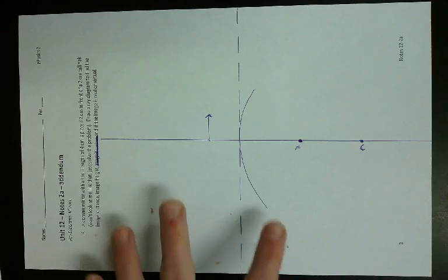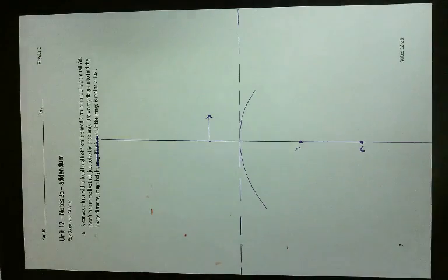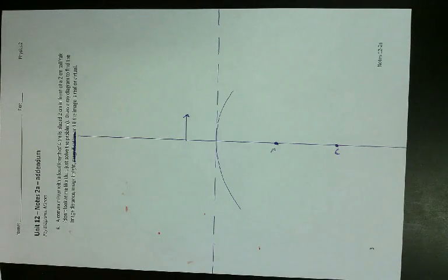Any questions before we move on? Okay. Let's do this. So there are three lines you have to draw. The first line you draw is parallel to the principal axis, and then reflects through F. The second one you draw goes through F, and then reflects parallel. And the third one you draw goes through C. So let's start with the one that's parallel.